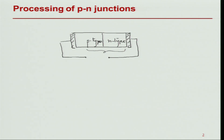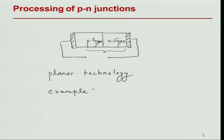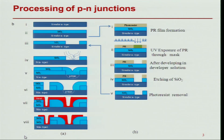If I want to make a P-N junction in the semiconductor processing fabrication, I normally use a technique called planar technology — the name will become clear as we describe this process. We are taking an example of a discrete P-N junction to describe the process. In this process, we are going to start with a silicon wafer — specifically an N-type silicon wafer. We get this wafer by growing a single crystal silicon boule which is then cut into small wafers about 500 microns thick, with a size anywhere from 2 inches to 12 inches today.